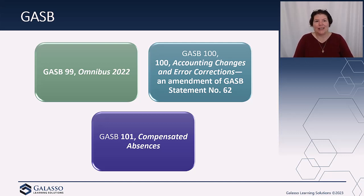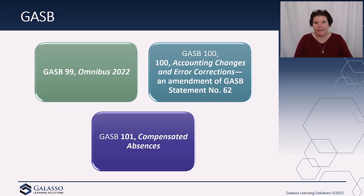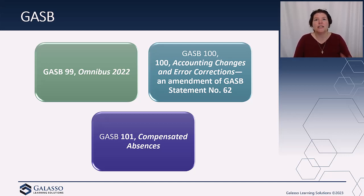GASB did get out the omnibus, which is just a bunch of unrelated items that needed technical corrections. GASB 100 moves the guidance out of the AICPA and FASB guidance for accounting changes and error corrections, and gives government-specific guidance. That's going to amend GASB 62, which was when we brought all that guidance into the GASB world — we'll now have GASB-specific guidance.